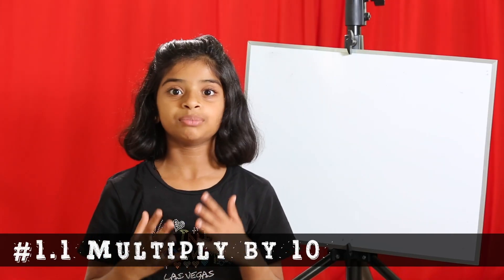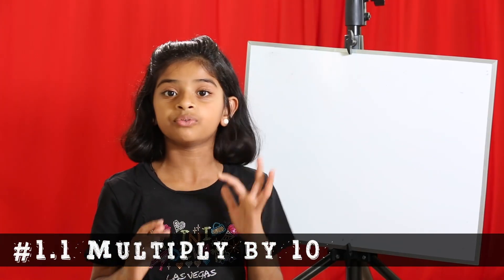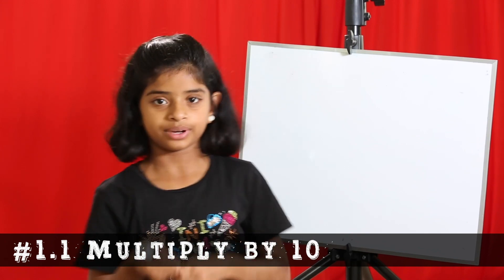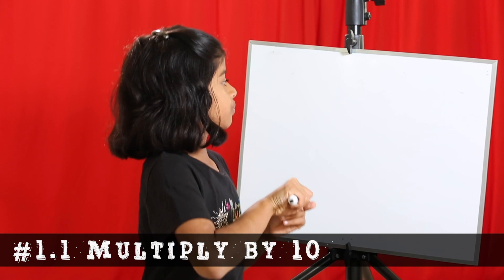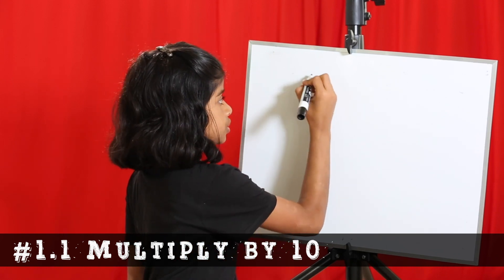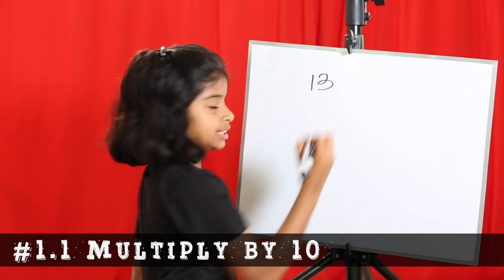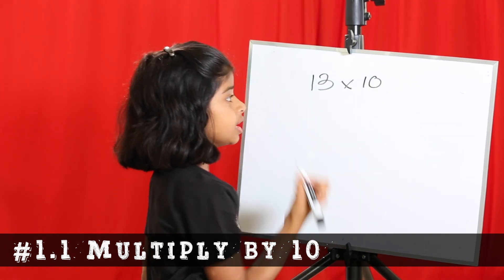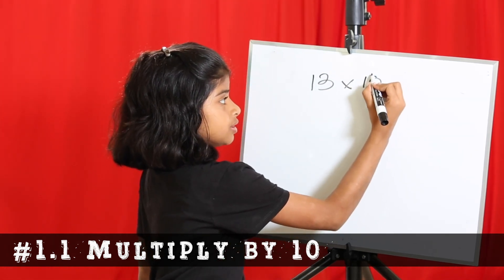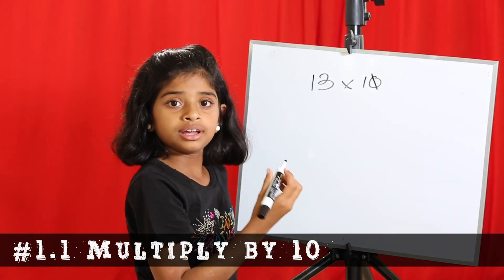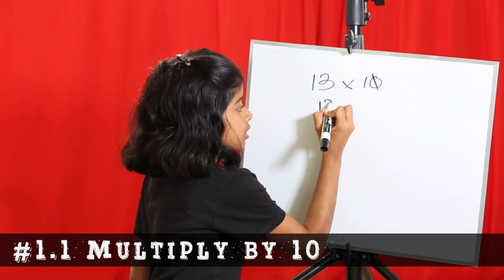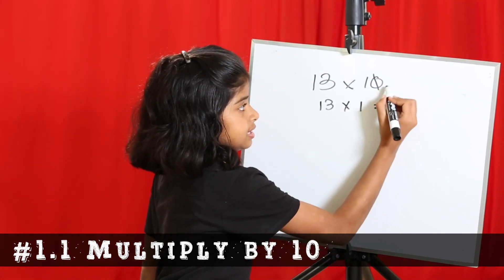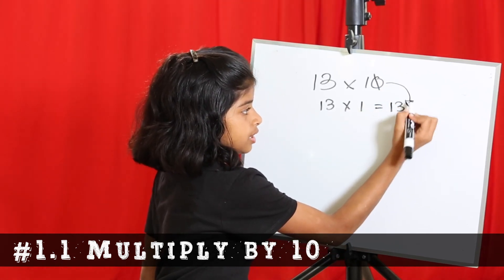Trick 1. Everyone knows this, but we're going to learn how to multiply with 10. If you don't know already, let me teach it to you really quick. If we have the number 13, for example, and we want to multiply it by 10, we would take out the 0 and do 13 times 1, which is 13, and then bring the 0 back over here, so it will be 130.